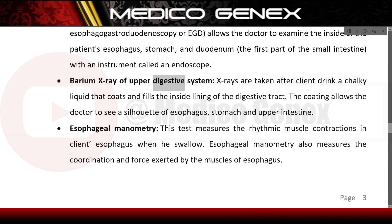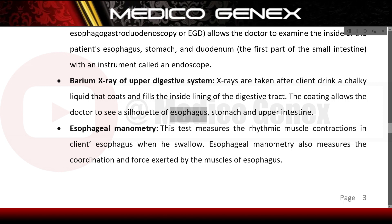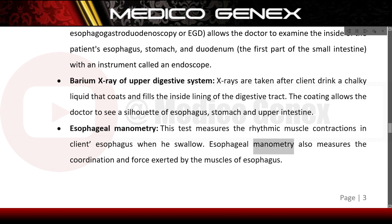Barium X-ray of the upper digestive system: X-rays are taken after the client drinks a chalky liquid that coats and fills the inside lining of the digestive tract, allowing the doctor to see a silhouette of the esophagus, stomach, and upper intestine. Esophageal manometry measures the rhythmic muscle contractions in the client's esophagus when swallowing, as well as the coordination and force exerted by the esophageal muscles.